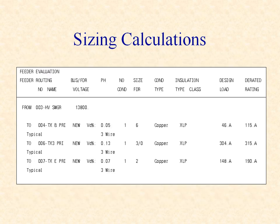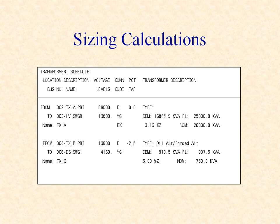The sizing report also compares the design load through each cable with the cable ampacity derated for ambient temperature and duck bank installation configurations. The branch voltage drop is calculated and used to size new cables and evaluate existing cables. The transformer sizing report lists each transformer rated voltage, winding configuration, design load, nominal and full load ratings, and the transformer impedance.